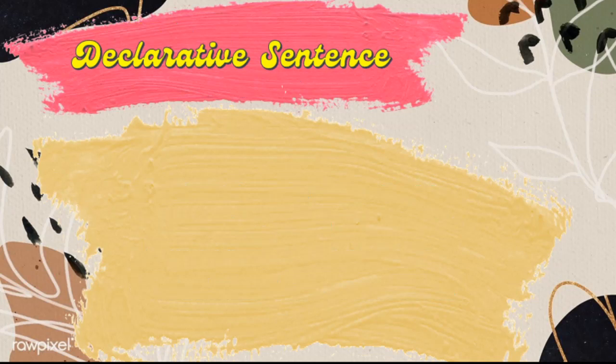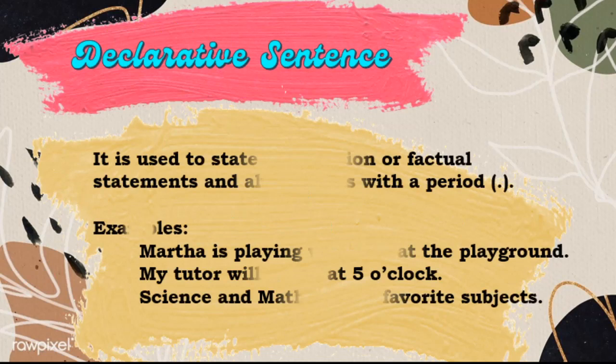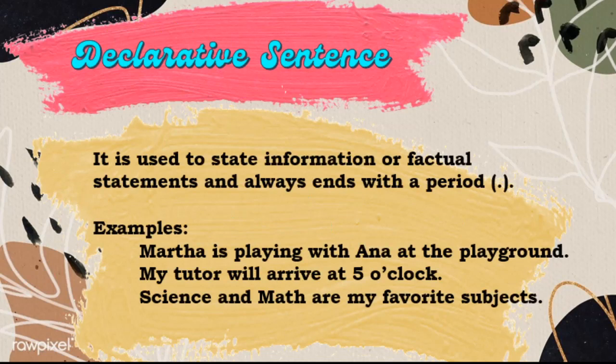Let's start with declarative sentence. What is a declarative sentence? It is used to state information or factual statements and always ends with a period. Examples: Martha is playing with Anna at the playground. My tutor will arrive at 5 o'clock. Science and math are my favorite subjects. We will notice that all these sentences simply aim to state different information or ideas.